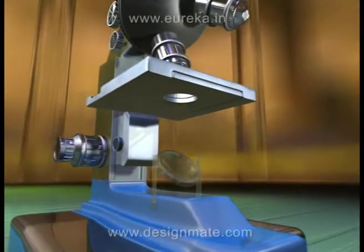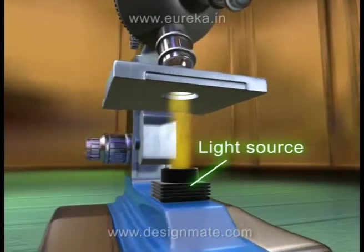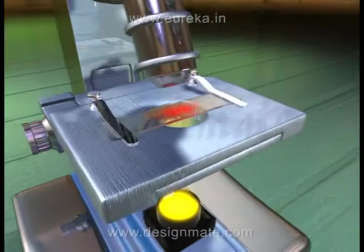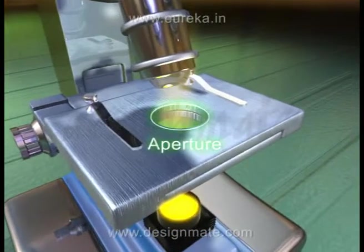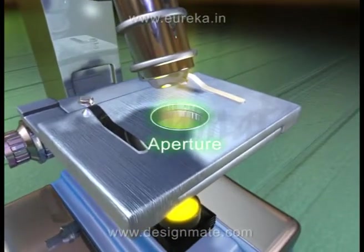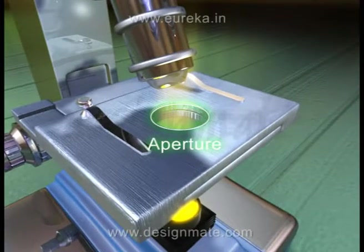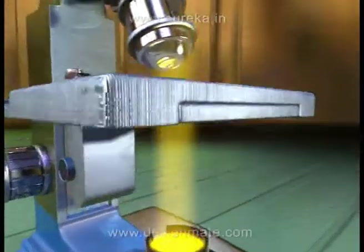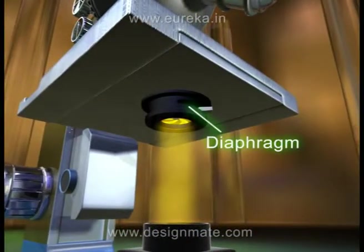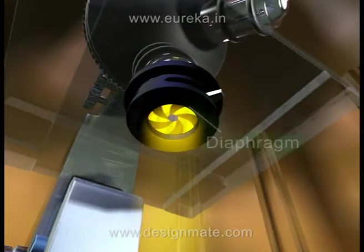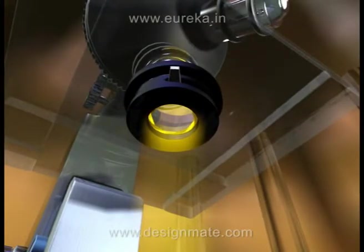Some microscopes use a light source to produce light. The stage has an aperture that allows the light to pass through the specimen for viewing it better. This is the diaphragm, which controls the amount of light going through the aperture.